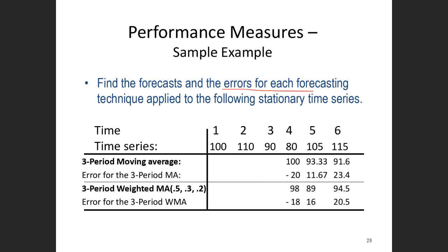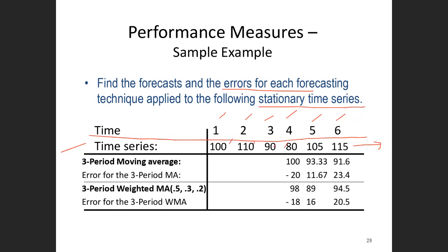Let's solve a numerical example: find the forecast and the error for each of the four techniques for this stationary time series. Here the time periods are one, two, three, four, five, and the series represents the actual observed values — for example, 100, 110, 90, then 80, 105, and 115 — represented as y of t.